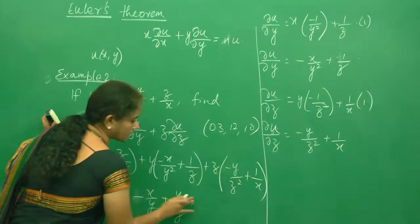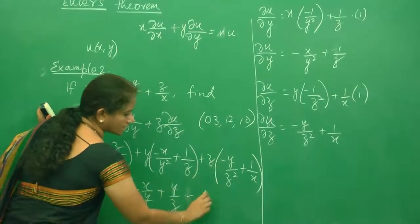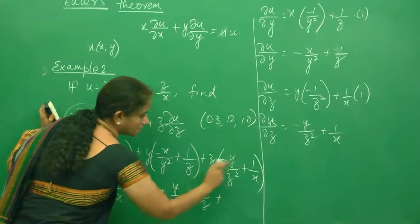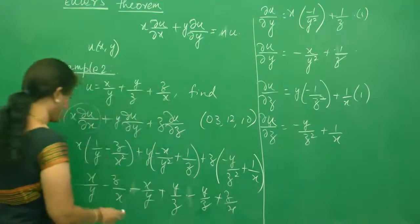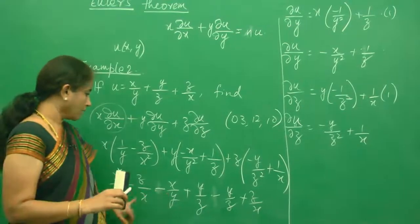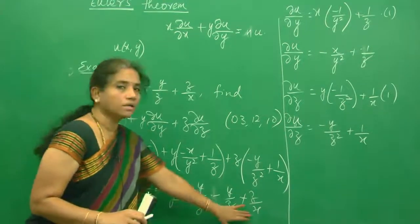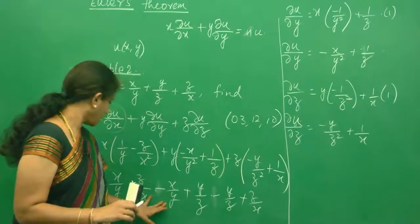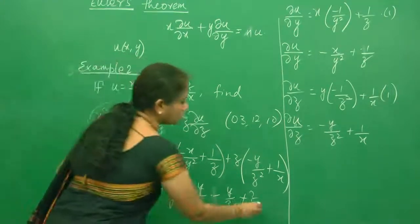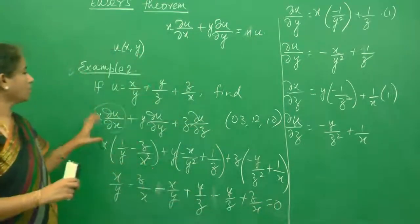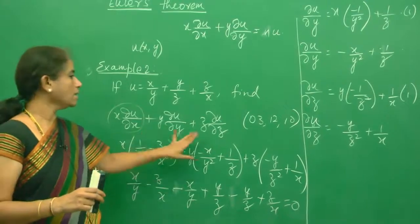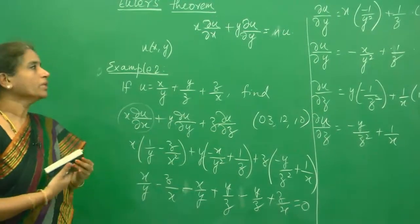You can see now: x/y with positive sign and negative sign cancel. z/x with negative sign and positive sign cancel. y/z with positive sign and negative sign cancel. So the net answer is 0. Therefore, the value of x·∂u/∂x plus y·∂u/∂y plus z·∂u/∂z is 0.